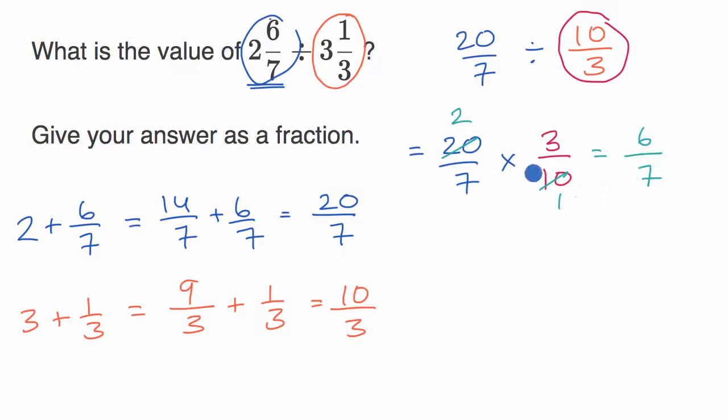Just as a refresher, when multiplying fractions, you just multiply the numerators, and you multiply the denominators. The other way you could have done this, you could have just said 20 times three, which would have been 60, over seven times 10, which is 70. And then if you wanted to simplify this in some form, you could divide both the numerator and the denominator by 10, and you would get what we got right over there.